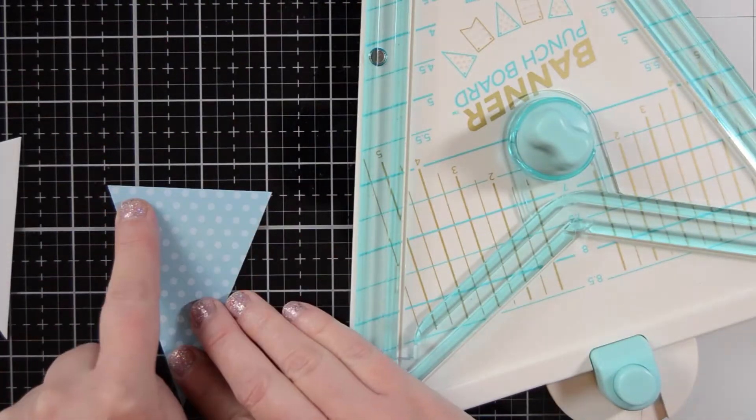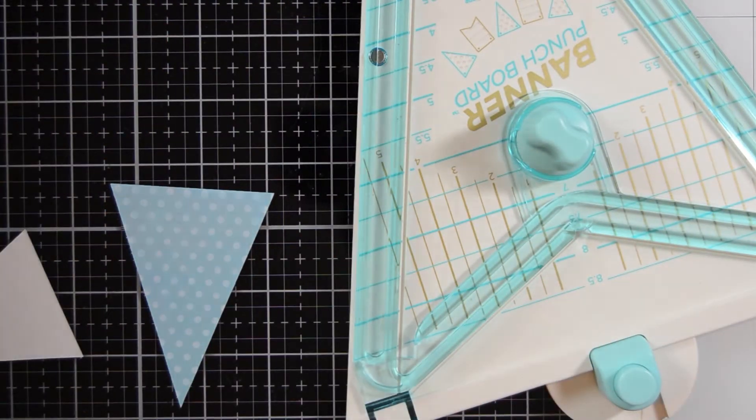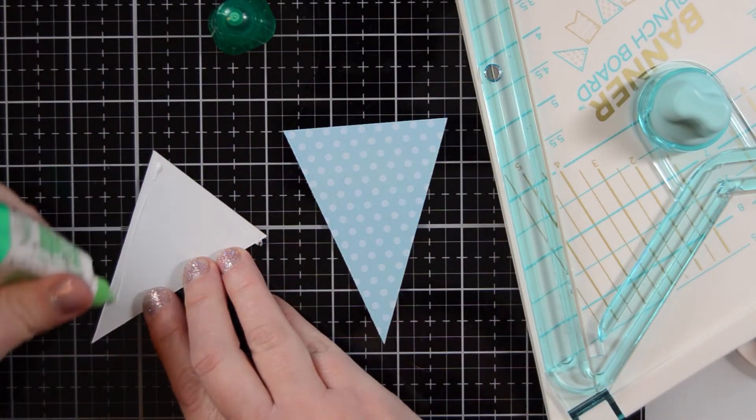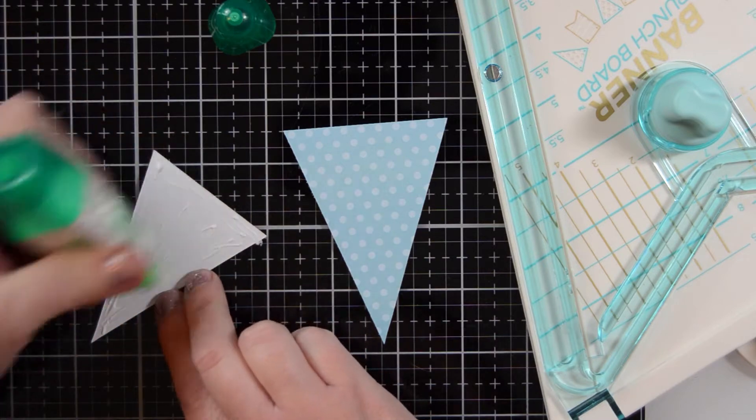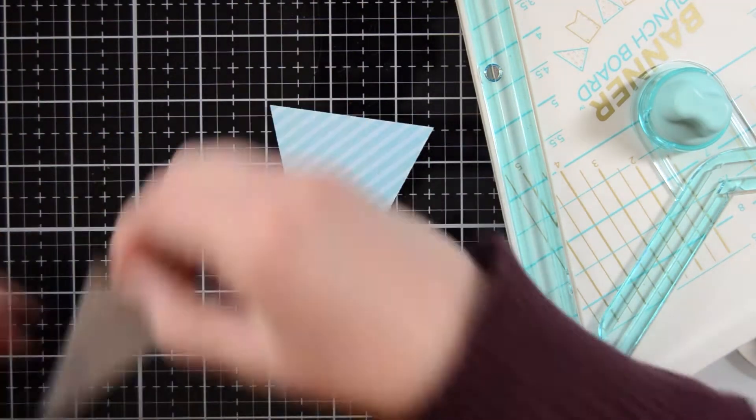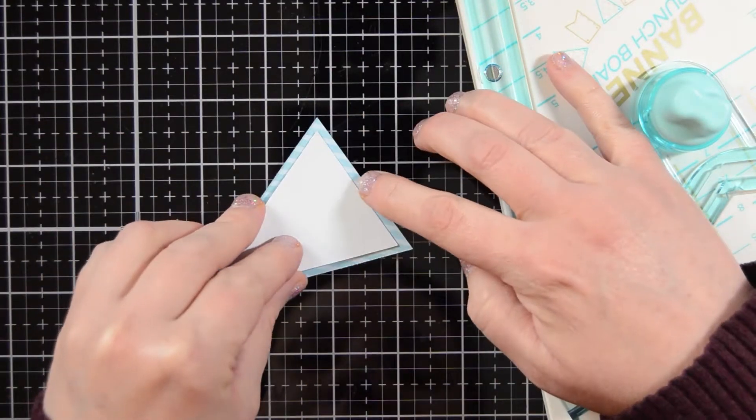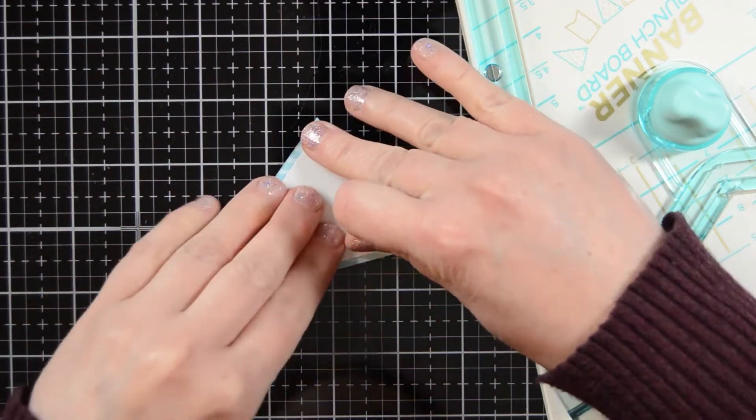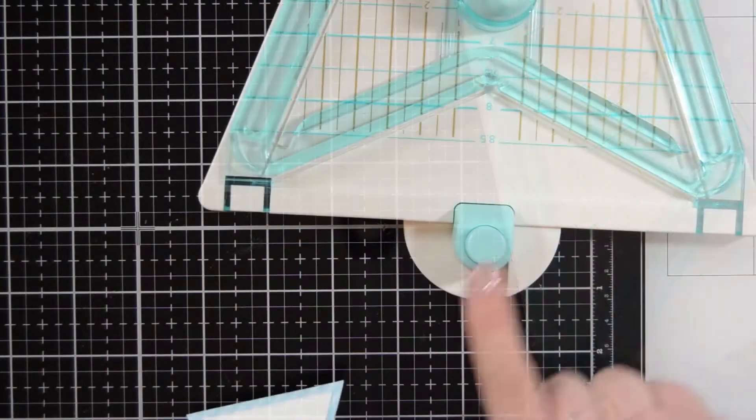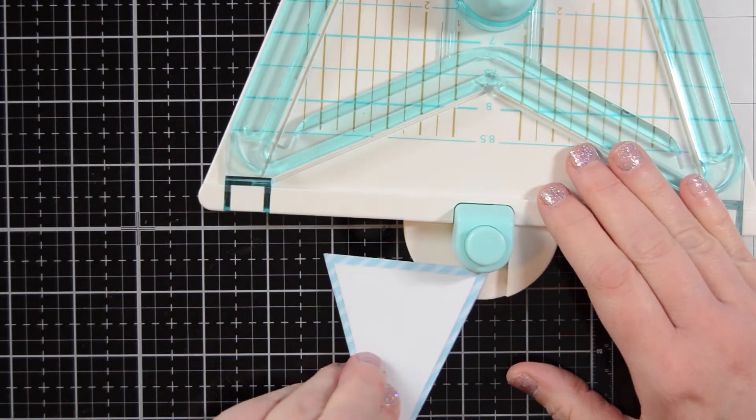So then you'll want to go ahead and just repeat that whole process for as many banner pieces as you want. I'm going to be spelling out jolly. So I have made five banners. So I'm just going to go ahead and adhere this one down here and then I will show you how this punch board also creates the holes for you to string through to make it a complete banner.